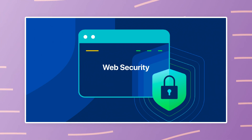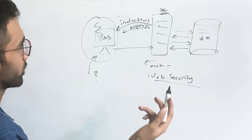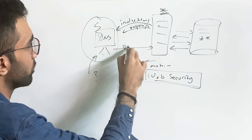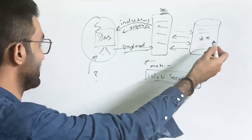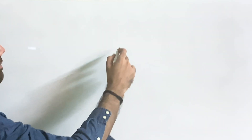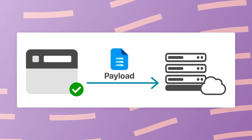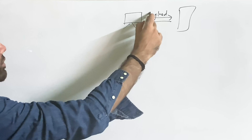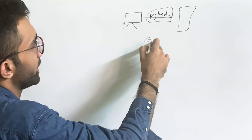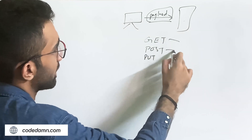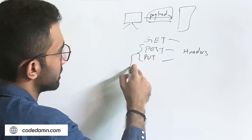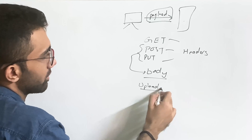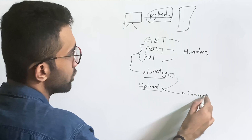As a backend developer you have to be extremely paranoid about web security. As a frontend developer you can ship almost anything without it affecting the backend, but as a backend developer it's your job to implement solid security measures so that the payload never corrupts or crashes your database or application layer. The payload is any information the client sends to the server — via POST, PUT, PATCH — through headers, body, or file uploads.